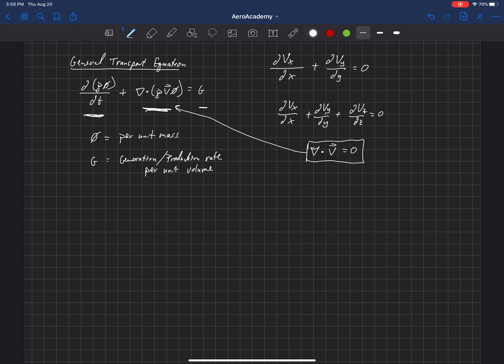Using this general transport equation, we can now look at conservation of mass. We can derive it from this equation. So we are interested in the conservation of mass inside of a control surface from this Eulerian perspective.